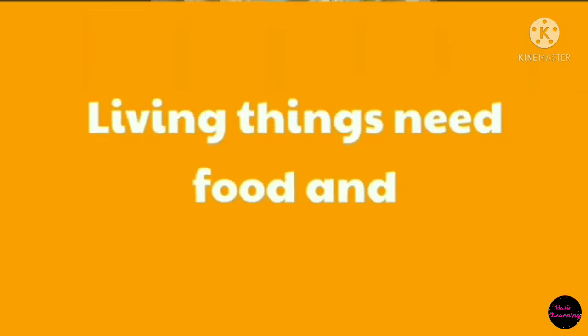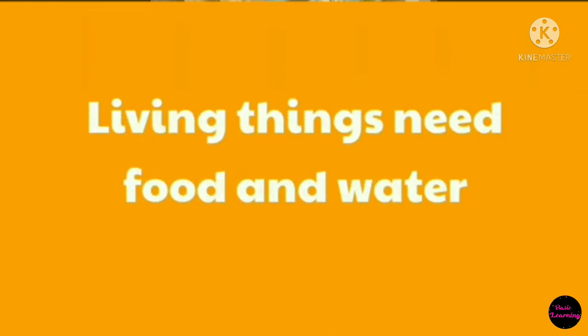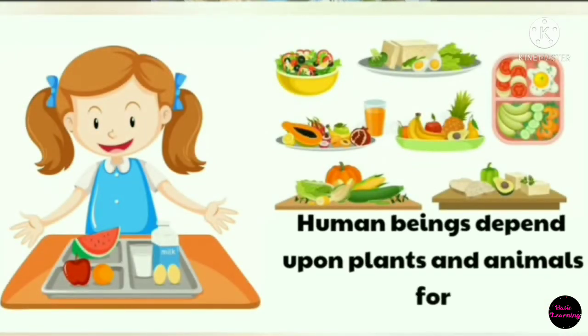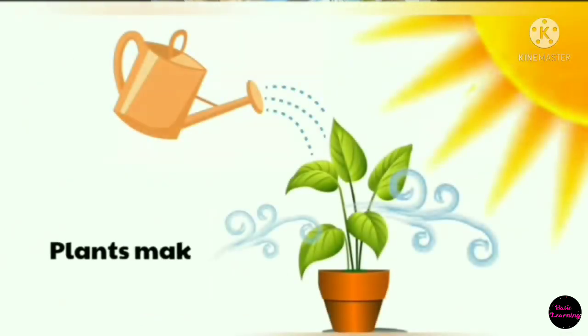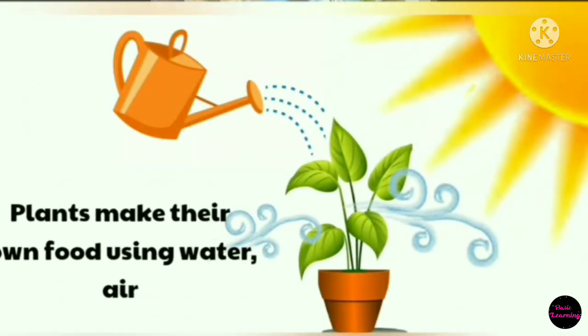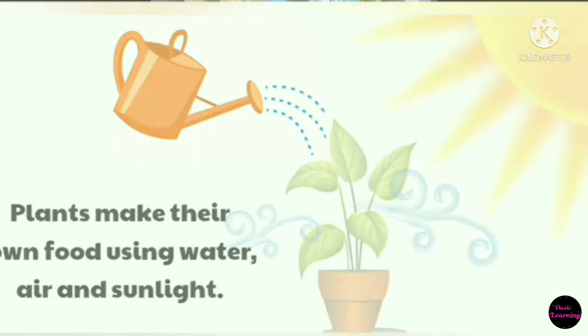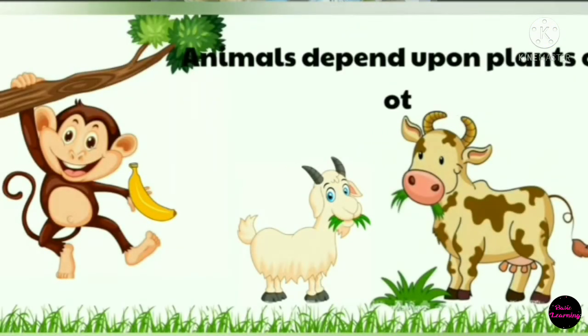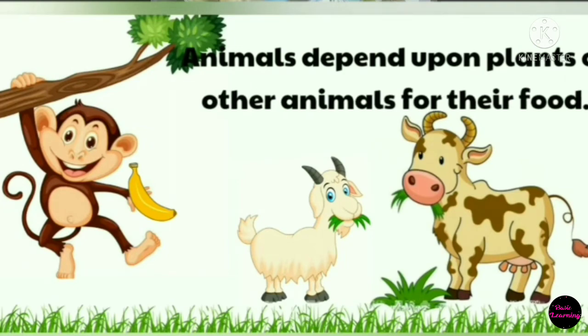Living things need food and water. Human beings depend upon plants and animals for their food. Plants make their own food using water, air, and sunlight. Animals depend upon plants or other animals for their food.